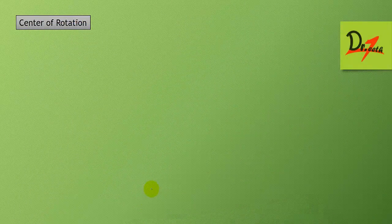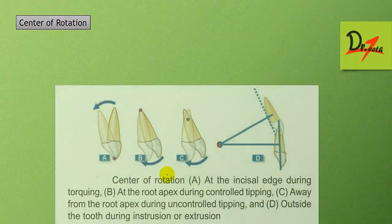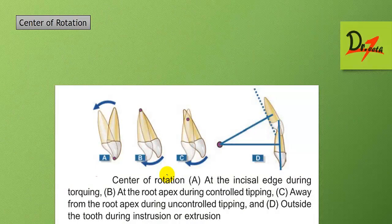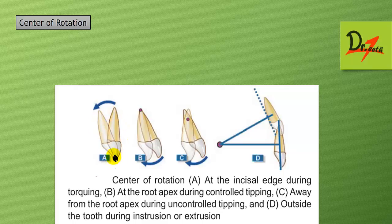The center of rotation is the point around which the tooth rotates or tips when the force is applied away from the center of resistance. If force is applied at a given point, the tooth will rotate around that point. The center of rotation changes according to the point of force application.